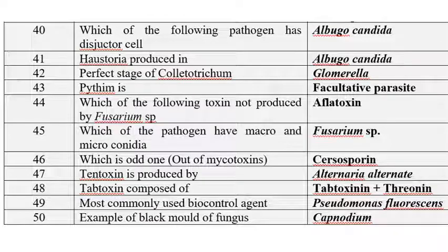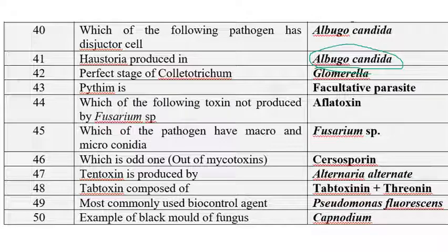Haustoria are produced in Albugo candida. Whereas in Pythium, no haustoria and appressoria are produced. In the perfect stage of Colletotrichum, we know it is Glomerella. Pythium is a facultative parasite.